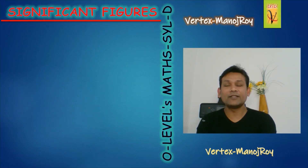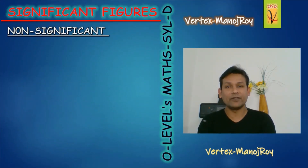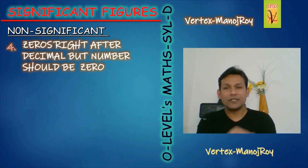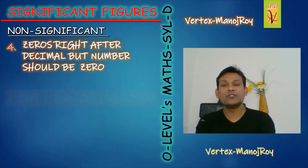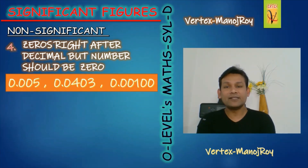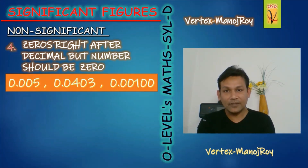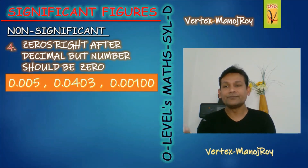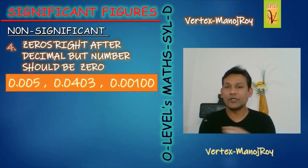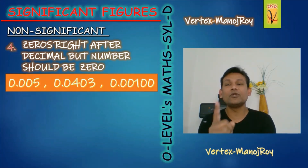Now, which numbers are not significant? Zeros right after the decimal when the number before the decimal is zero. For example, 0.005 — the number before the decimal is zero, and the zeros after the decimal are not significant. Only 5 is significant, meaning there is only one significant figure.